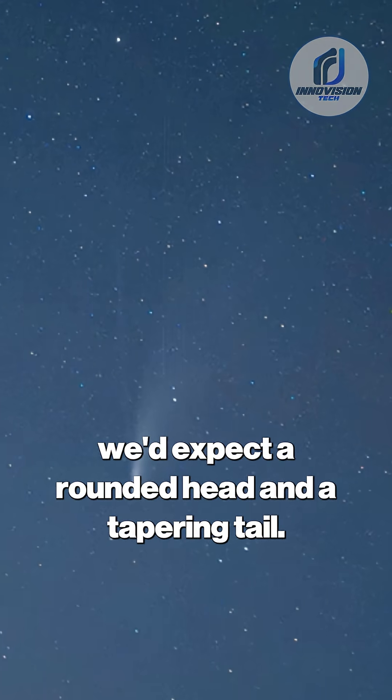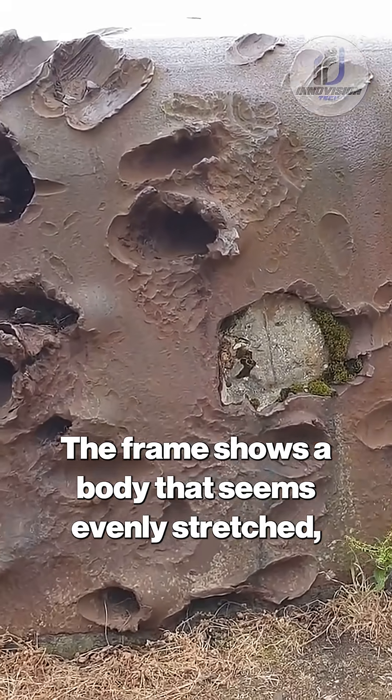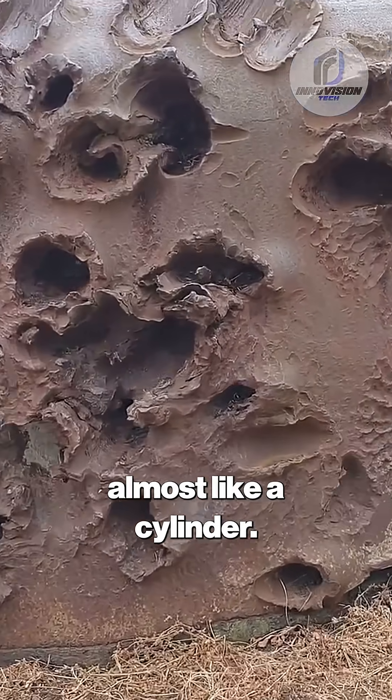If it were a normal comet, we'd expect a rounded head and a tapering tail. This is different. The frame shows a body that seems evenly stretched, almost like a cylinder.